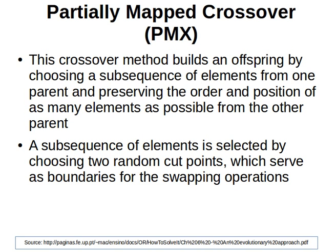Welcome back. We're still covering crossover methods for permutation representations. In this video, we're going to be looking at the partially mapped crossover. In this method, we build an offspring by choosing a subsequence of elements from one parent, and we try to preserve the order and position of as many elements as possible from the second parent. The subsequence of elements, or that chunk we copy from the first parent to the child, is selected by choosing two random cut points.